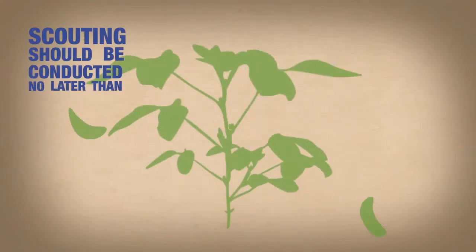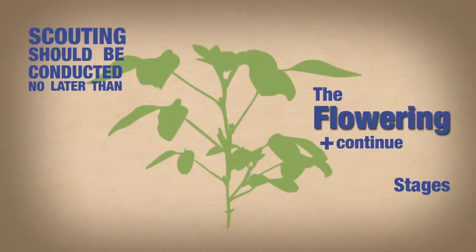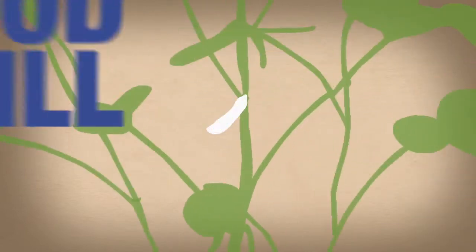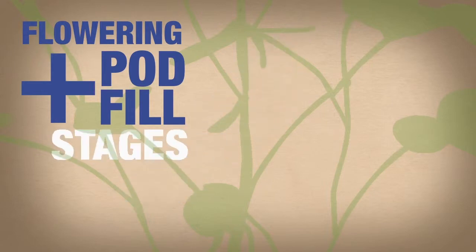Scouting should be conducted no later than the flowering stages and continue through the reproductive stages. These stages occur when the plant blossoms and the soybean pod fills up. These stages can be broken down into the following sub-stages.